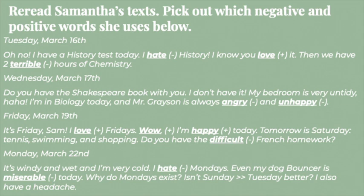Now, a couple of quick grammar notes about these messages. I'm sure a lot of you noticed that you can use context to try to figure out these words. For example, on Monday she is talking about how Monday shouldn't exist, Sunday to Tuesday is better, she has a headache. So even if we don't see the negative words, she is complaining about Monday, so we can guess she is in a bad mood. The negative words help us, but often we can tell what words mean by the ideas around them — a little trick there.